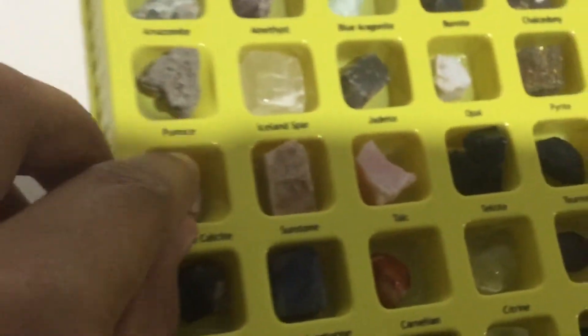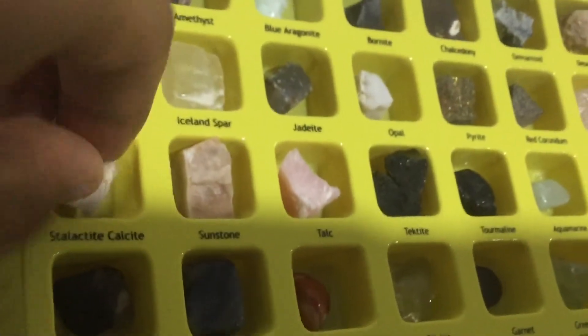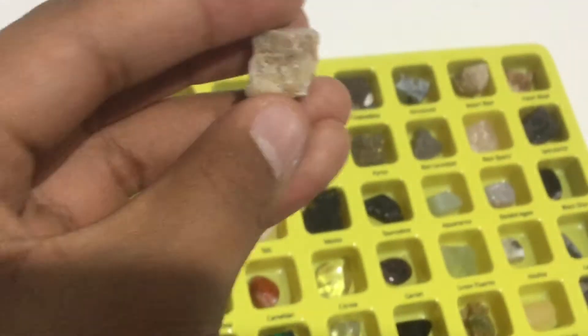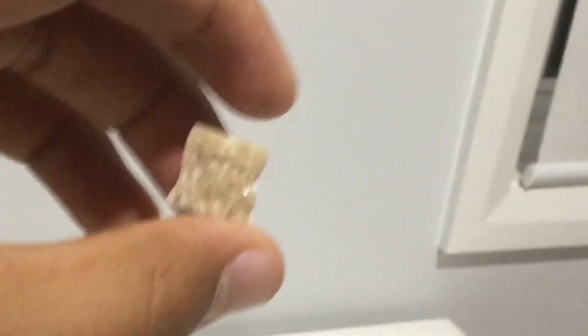This one is stalactite calcite. It comes from inside water when water and rocks form above the water in pointy shapes. Another fact is the ones at the bottom are called stalagmites, which fall from the bottom.